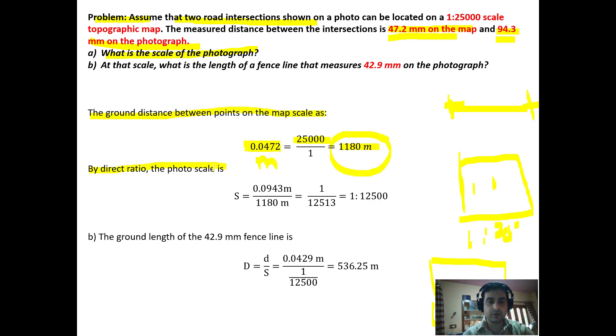By direct ratio, the photo scale equals the distance on the photo in meters, which is 94.3 mm or 0.0943 meters, divided by the ground distance 1180 meters, which equals 1 upon 12,513, so 1 is to 12,500 approximately is the scale of the photo.